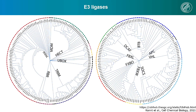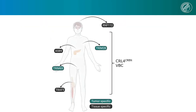Coming back to this E3 ligase overview slide — from this picture, it becomes clear that there are way more E3 ligases than just Cereblon and VHL. If we look at how many of these E3 ligases have been utilized for PROTACs until now, it is actually less than 2%. The next step, which we and other labs are also interested in, is characterizing more of these E3 ligases and making them usable for the PROTAC approach. This becomes especially interesting given that, in contrast to Cereblon and VHL, which are ubiquitously expressed in almost all tissues, there are tissue-specific and also tumor-specific E3 ligases.